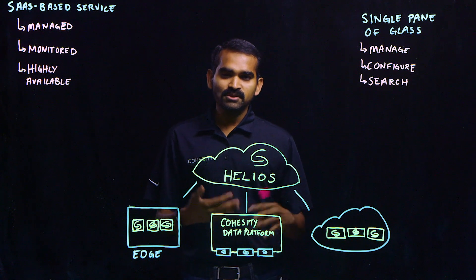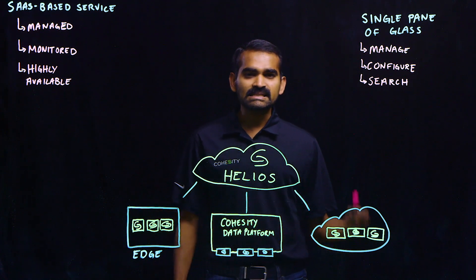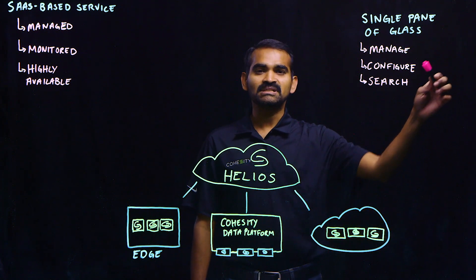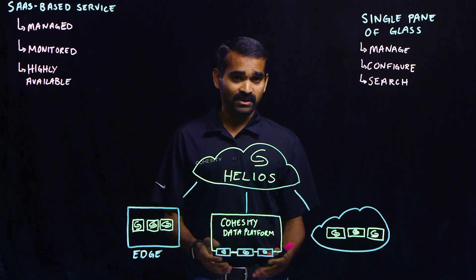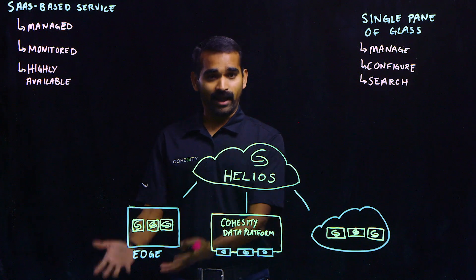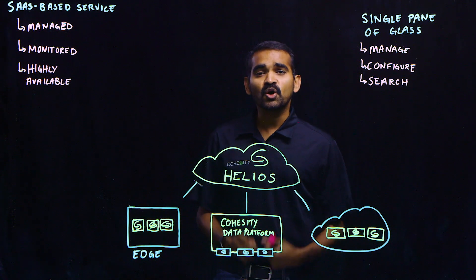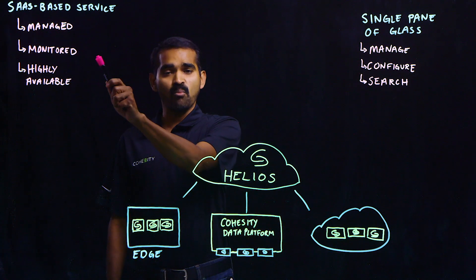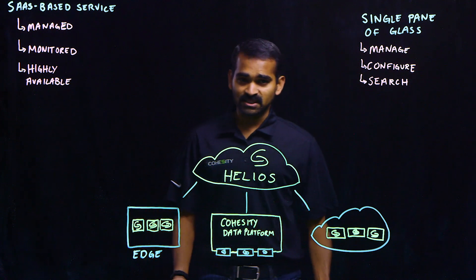The Helios solution is a SaaS-based application management solution. It is a single pane of glass where our customers can manage, configure, and search the data in the Cohesity data platform, hosted either on-prem, in the cloud, or at the edge. As it is a SaaS-based solution, the Cohesity Operations team takes care of managing the service, monitoring the service, and making sure it's highly available for our customers.